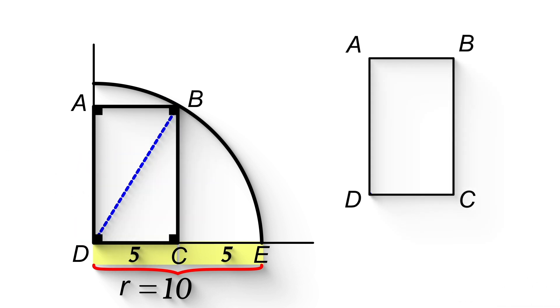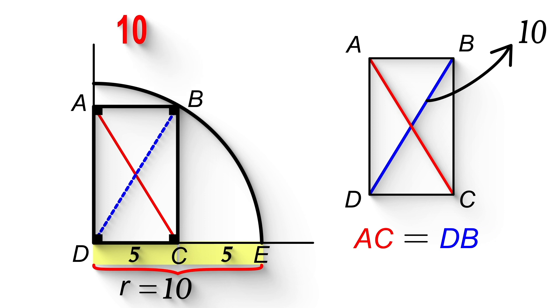Next, since the diagonals of a rectangle are equal, line AC will be also 10 units long. Thus, 10 will be the solution.